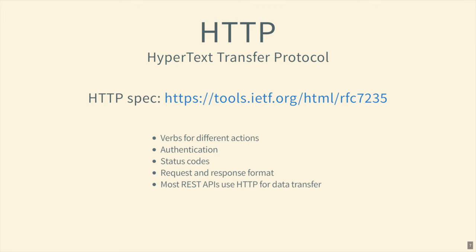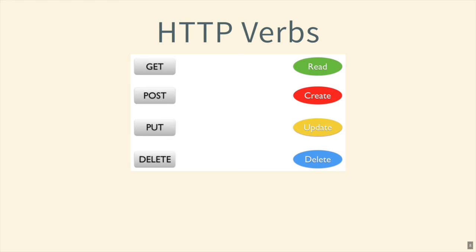Most REST APIs use HTTP. Here are some common verbs: GET is a read, POST is a create — like inserting a new user row into a table. PUT is an update — for example, updating just the email field for a user. DELETE is for removing a record entirely, like when someone leaves your community.